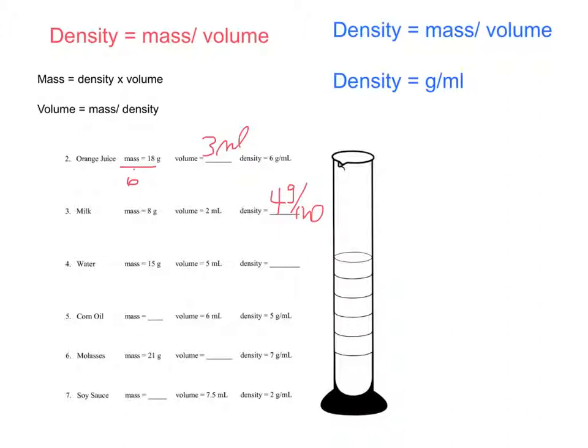Number 4, mass is 15 grams, volume is 5 milliliters. Density equals mass divided by volume. 15 divided by 5, we would get 3 grams per milliliter.